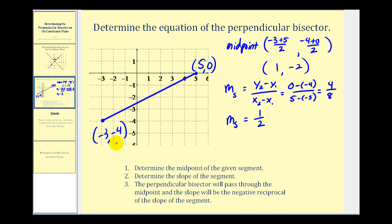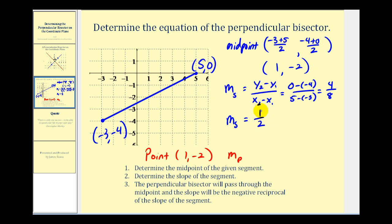So the perpendicular bisector passes through the point one, negative two, and its slope is the negative reciprocal of one-half. If we flip it and change the sign, we get negative two over one, or just negative two.